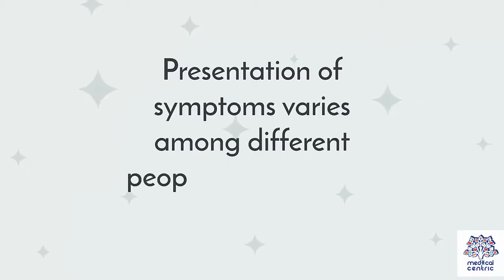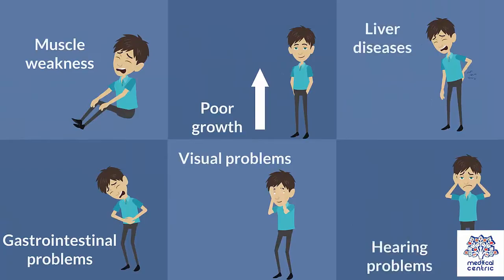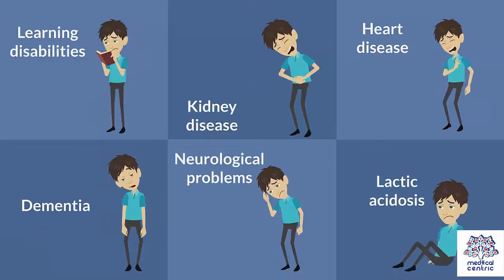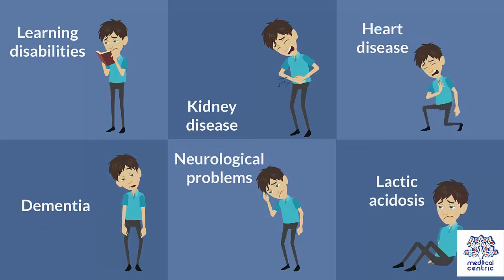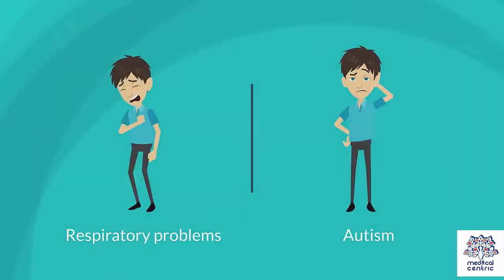Presentation of symptoms varies among different people. The common symptoms are muscle weakness, poor growth, liver diseases, gastrointestinal problems, unexplained vomiting, cramping, reflux, visual problems, hearing problems, learning disabilities, kidney disease, heart disease, dementia, neurological problems, stroke, seizure, lactic acidosis or a buildup of lactate, respiratory problems, and autism.